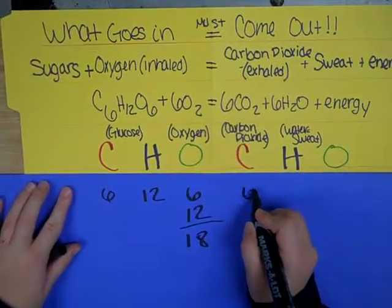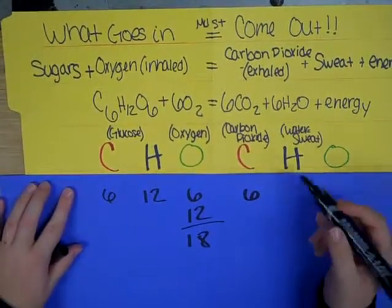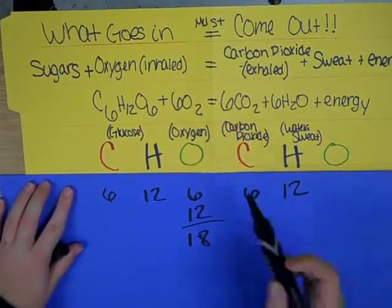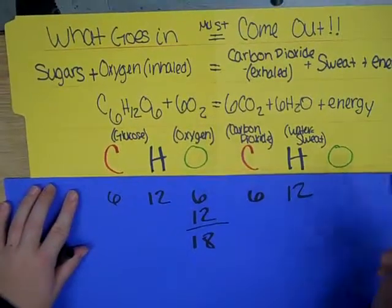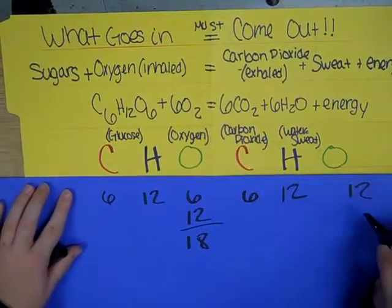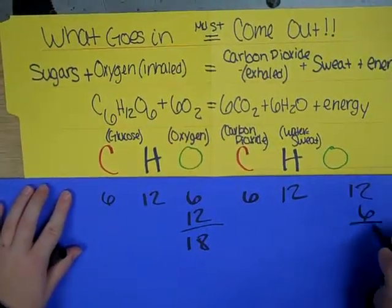there are 6 carbons, 12 hydrogens, and for oxygens, there's another 6 times 2 for 12, plus 6 more oxygens to get 18.